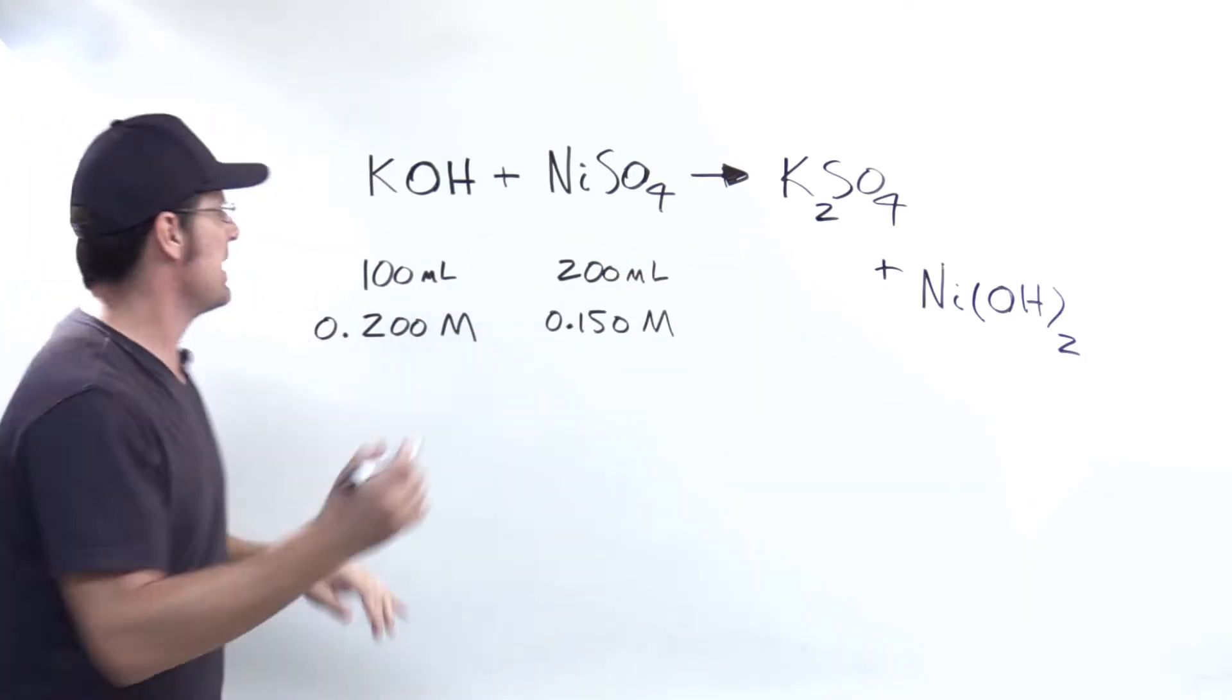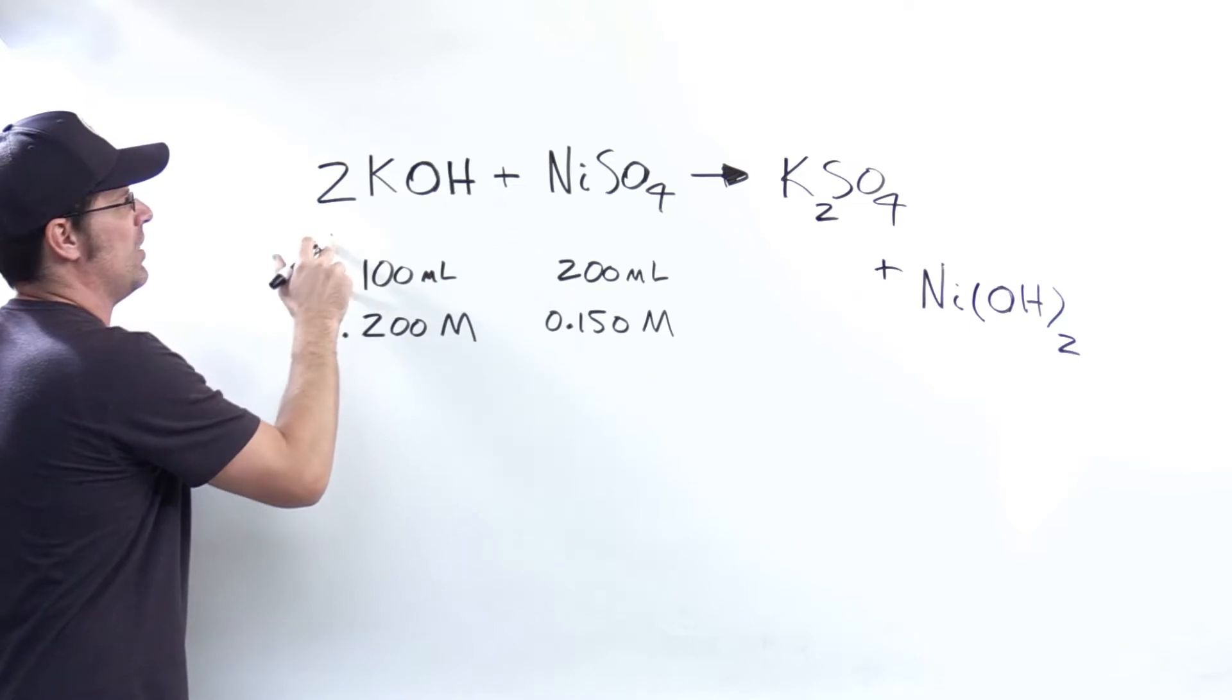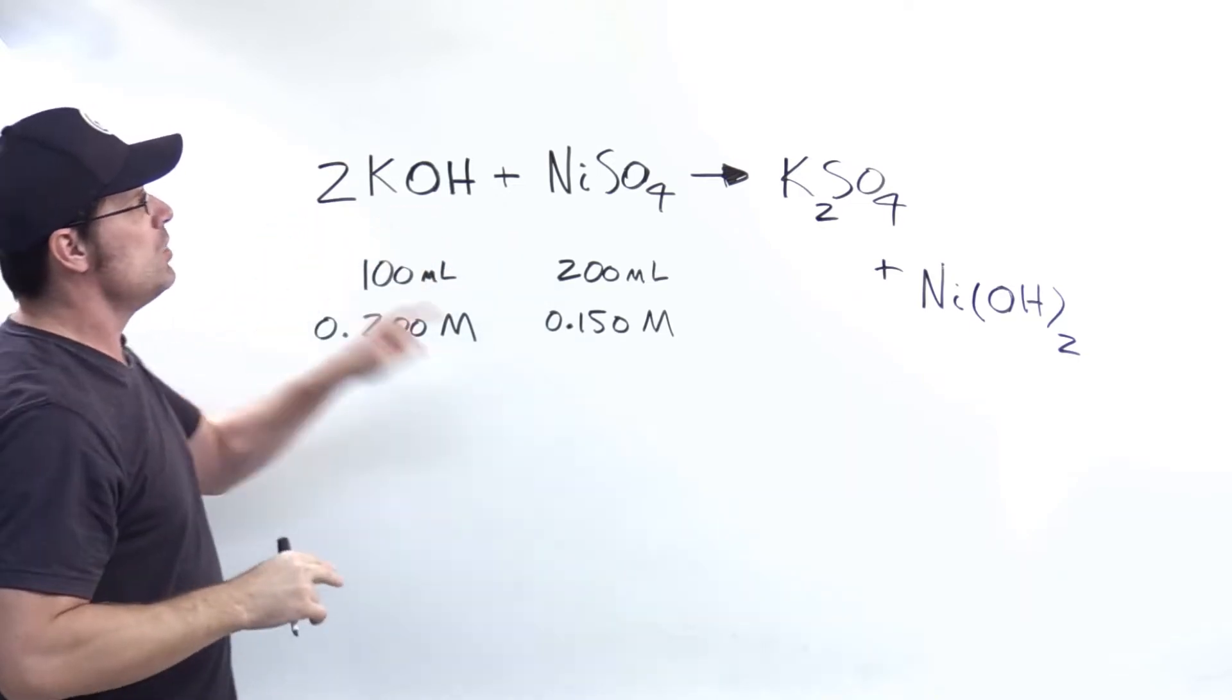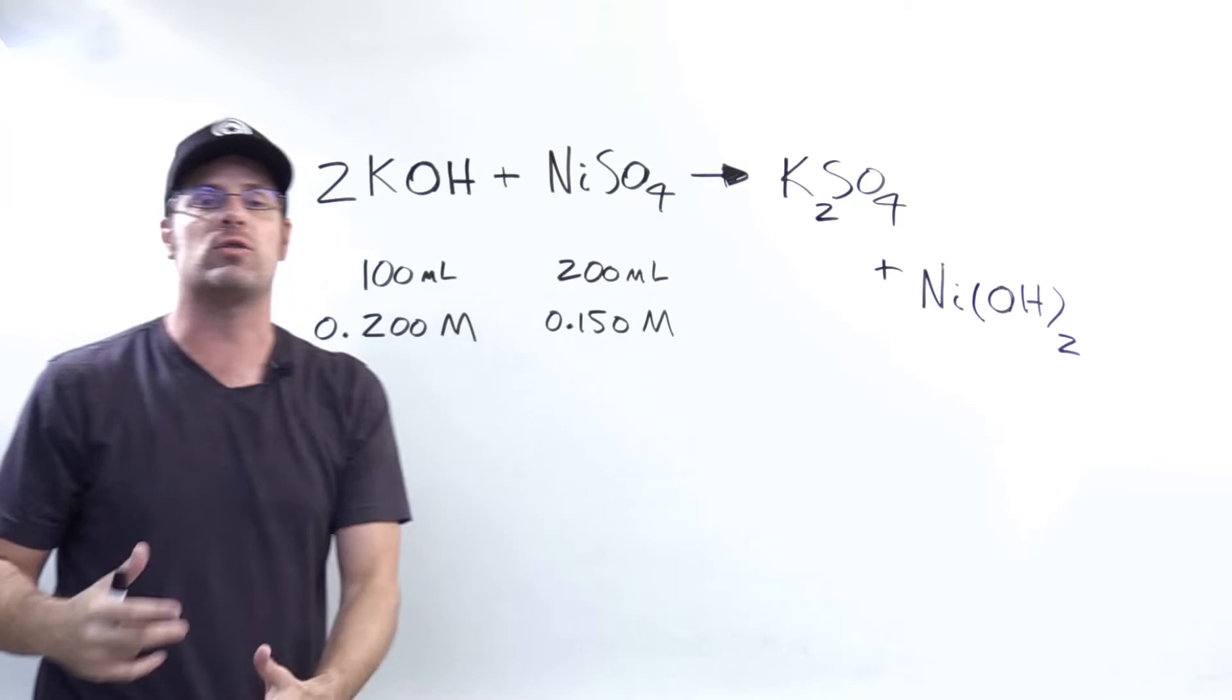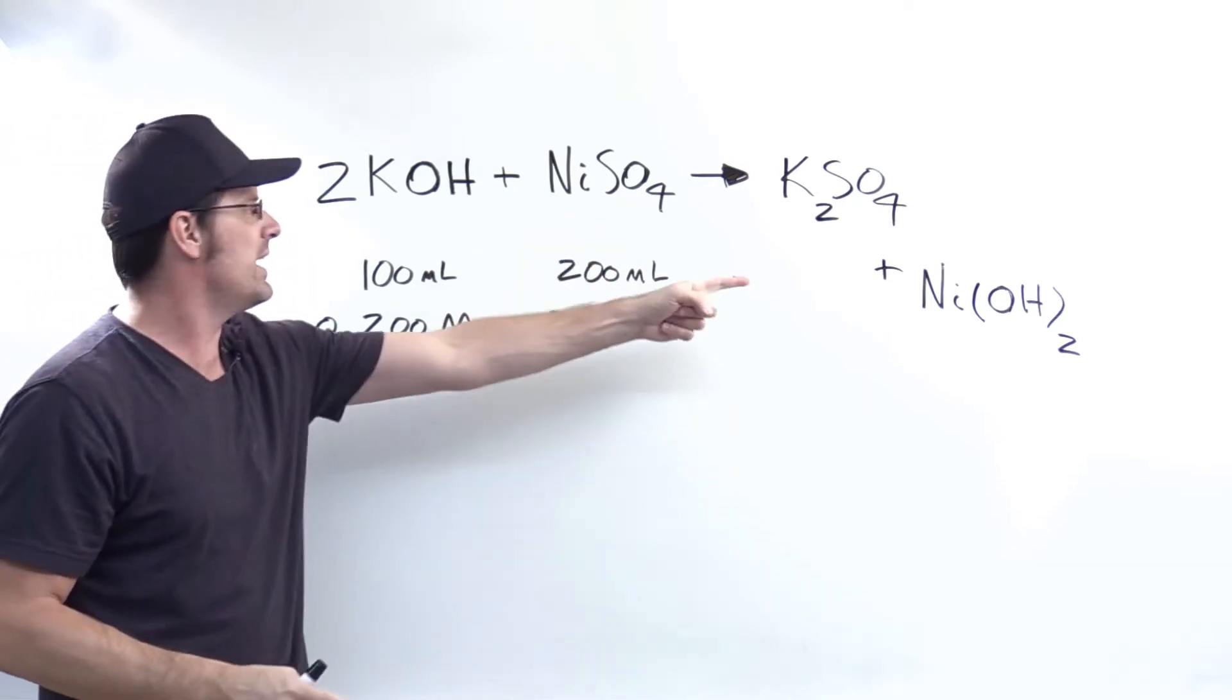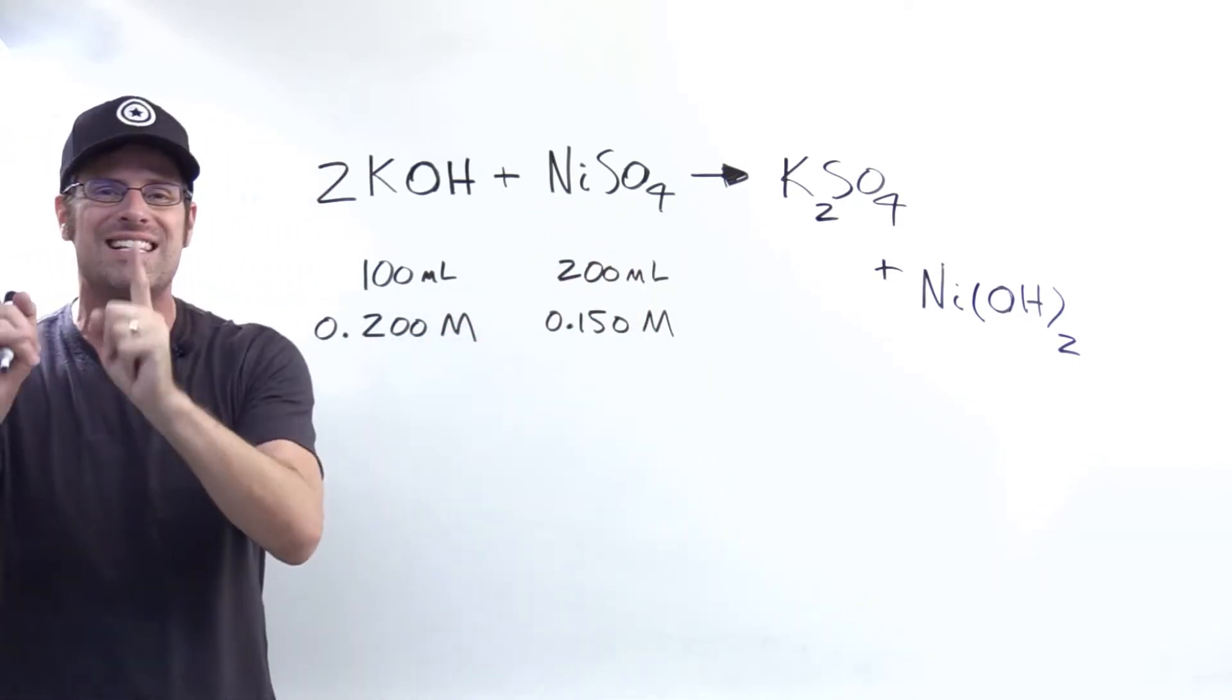I'm going to add a two coefficient right there. That multiplies, so you're giving me two hydroxides as well, which does match or balance the two hydroxides in my product. I have one nickel, one nickel, and one sulfate, one sulfate. So that is a balanced chemical equation.